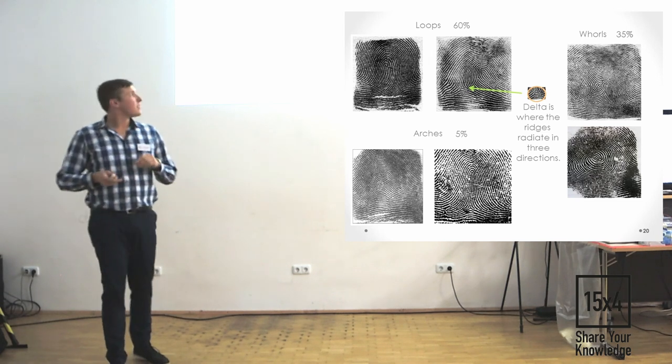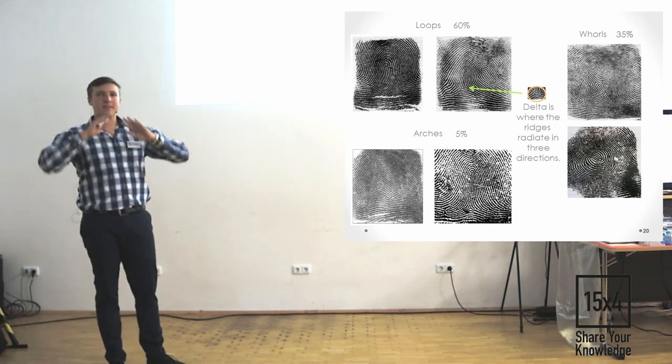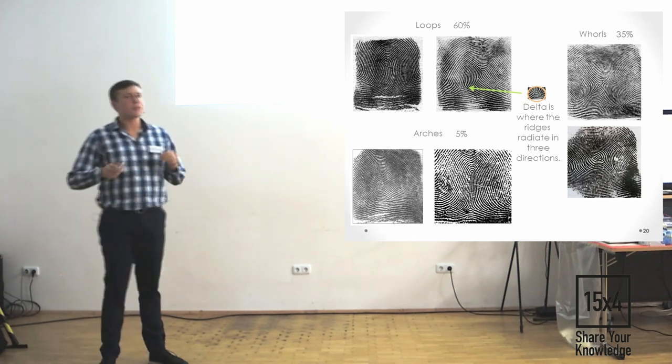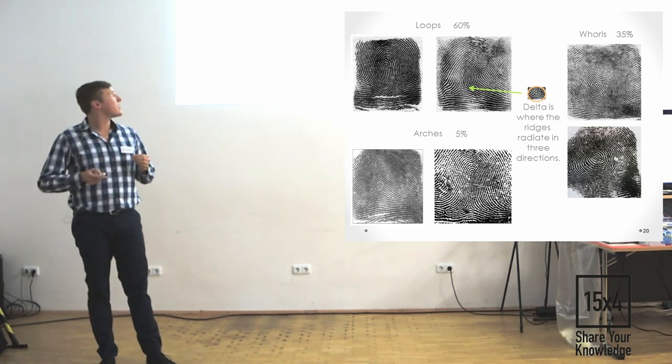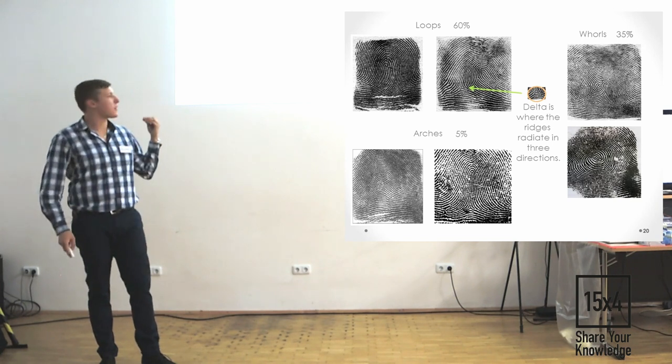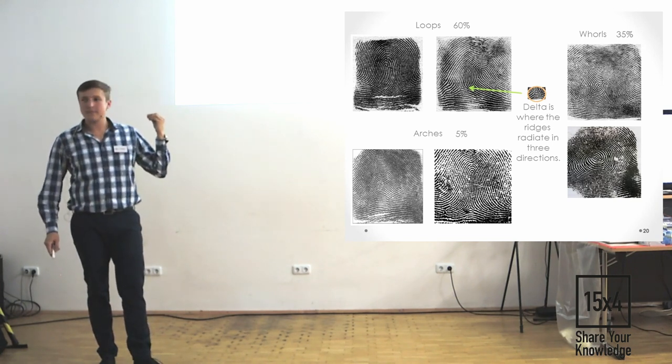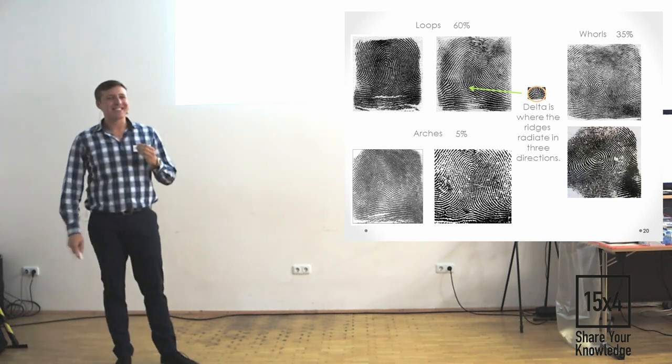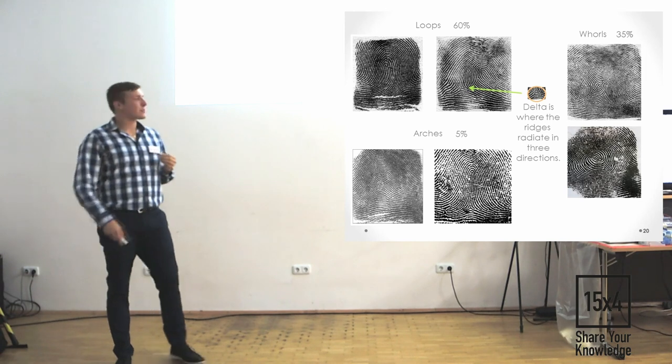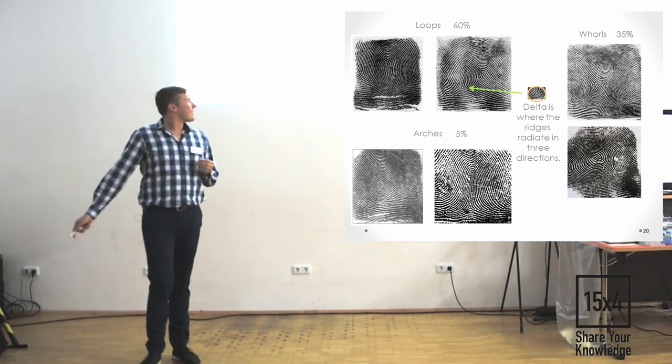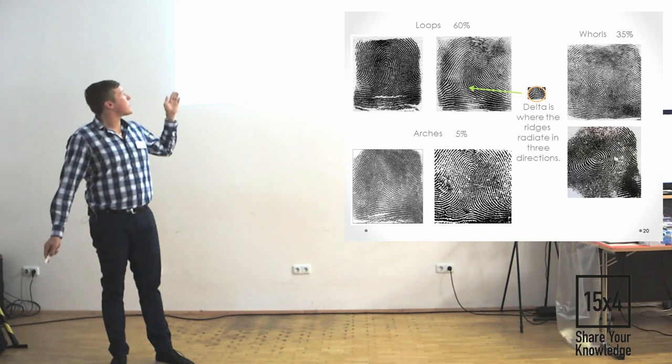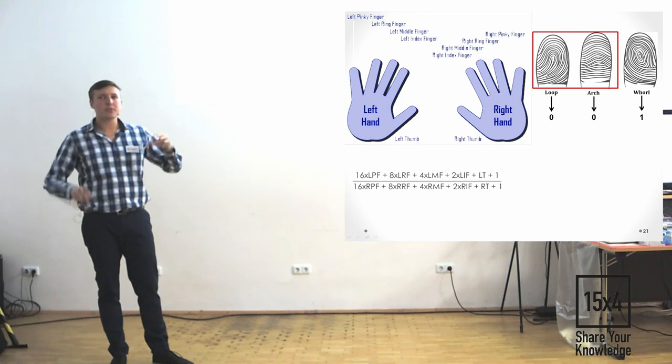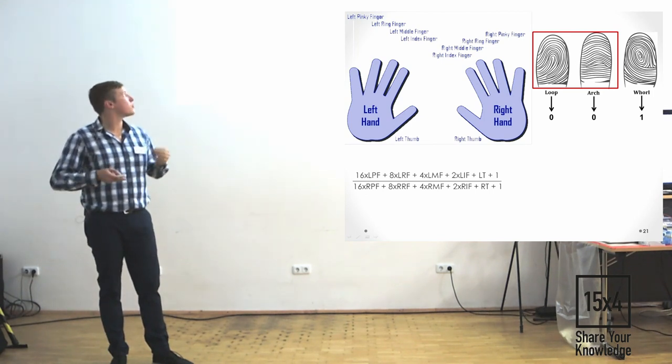If you have a look on your fingers, almost most of you, you have loops. Sixty percent of all fingerprints, it's loops. A little bit less is whorls. And arcs. It takes some time. But it's better to do in the box because it takes some time. Since the arcs only five percent of people unite them with loops in one group. And just to transfer this data to numeric one.